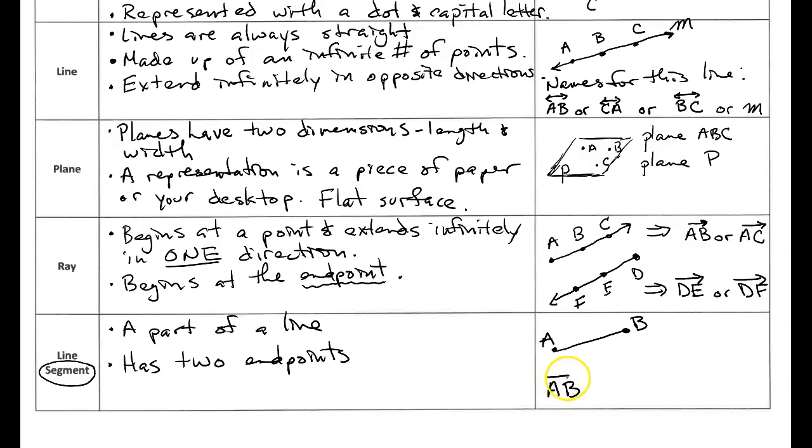Remember the arrowheads indicate that this continues forever in both directions. This little segment symbol means that it's going to end at A and B. Or we could flip the letters around and we can call it segment BA. Now I could have a segment that has three points C, D, and E.